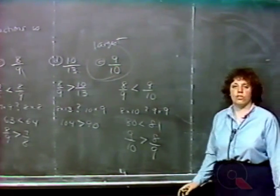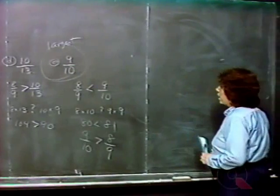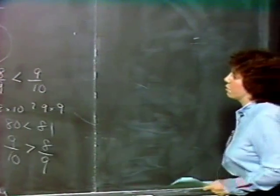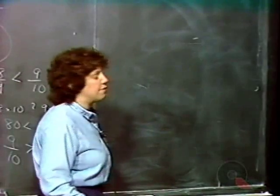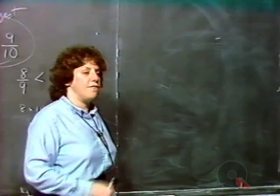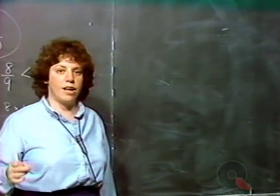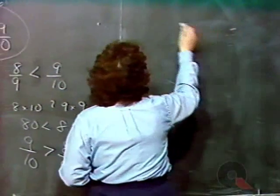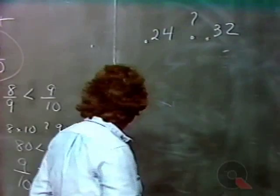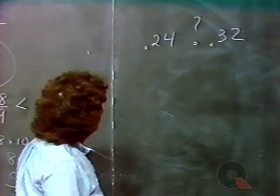Sometimes you are asked to pick the largest or smallest number from a group written as decimals. We need to understand how to compare the sizes of decimal numbers. For a pure decimal — a number with no digits to the left of the decimal point — compare the first digit to the right of the decimal point. If they're different, the smaller digit determines the smaller decimal. If they're the same, move on to the second digit to the right of the decimal point.